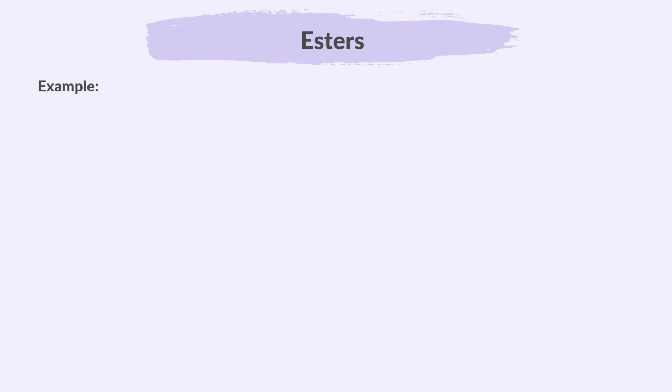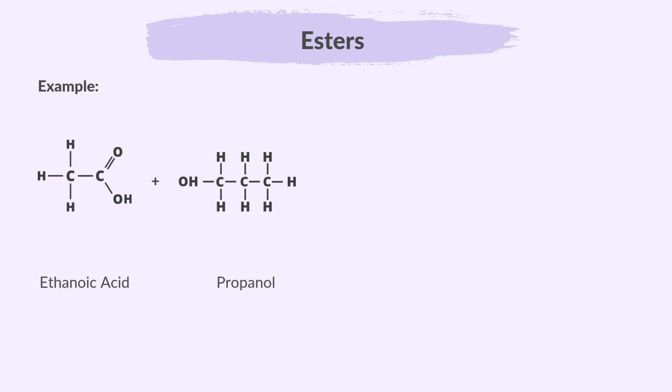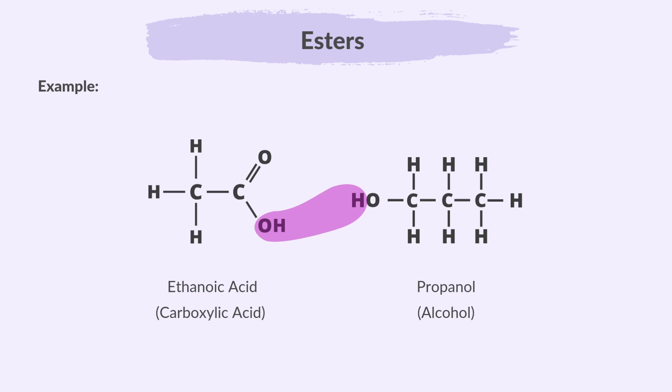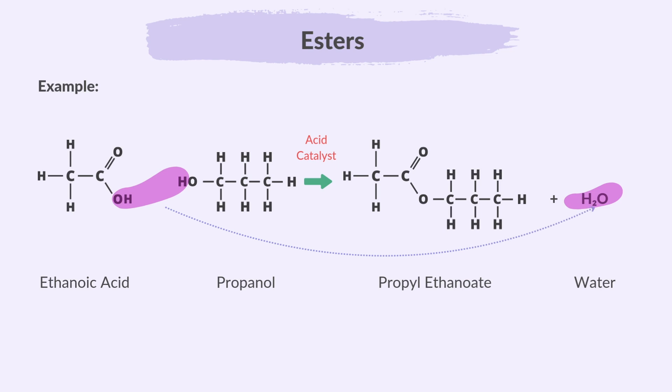For example, when ethanoic acid, a carboxylic acid, reacts with propanol, which is an alcohol, an ester called propyl ethanoate is produced along with water. In this reaction, the OH from the carboxylic acid and the H from the alcohol combine to form water. The remaining parts join together to form the ester, which contains the COO ester group.